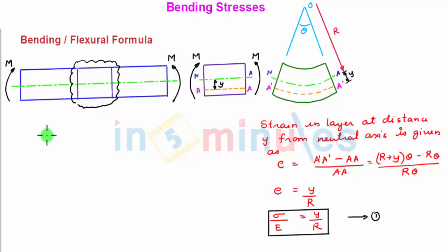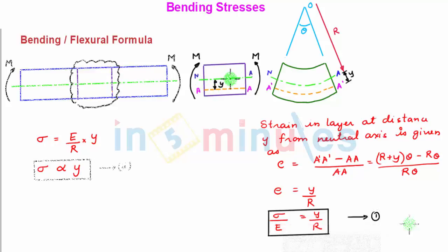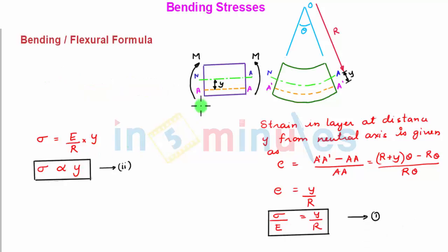From equation 1, we can write longitudinal stress sigma is equal to E by R multiplied by Y. Since E is the Young's modulus, which is constant, and R is the radius of curvature, sigma (longitudinal stress) is directly proportional to Y, where Y is the vertical distance of the layer from the neutral axis. This shows that as we move away from the neutral axis, the magnitude of stress increases linearly.